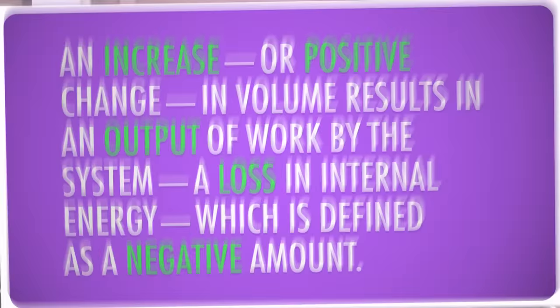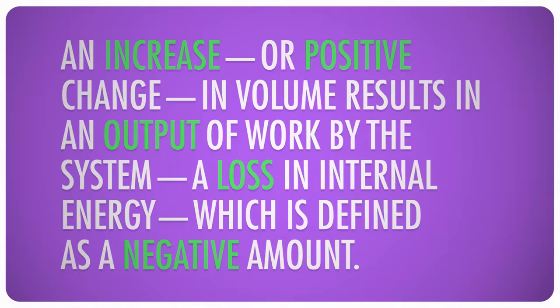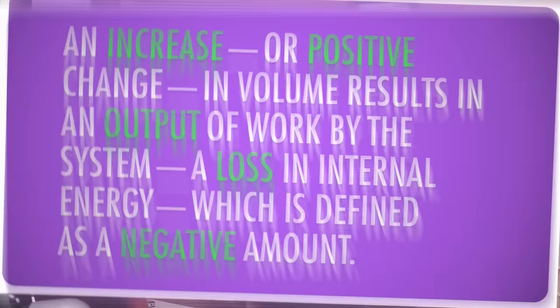Now, the signs are a little bit weird here. An increase, or positive change in volume, results in an output of work by the system, a loss in internal energy, which is defined as a negative amount. So the signs for work, and for P delta V, will always be opposite. And so, voila, the P delta V parts cancel. Delta H equals the heat of reaction. Change in enthalpy is equal to the heat gained or lost by the system. So I guess in the end, the capital H for enthalpy does kind of make sense.